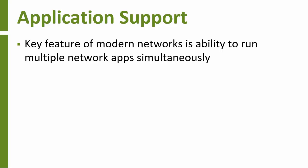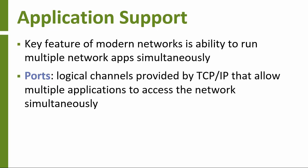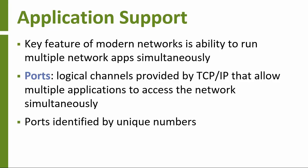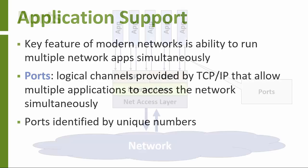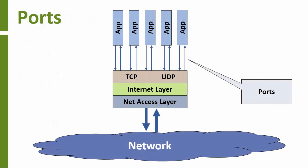Everyone knows you can run multiple networked applications on the same computer. TCP-IP supports multiple applications simultaneously through logical channels referred to as ports. Every port has a unique number used to identify it. An easy way to understand ports is to think of them as logical pipelines through the network stack — data can flow back and forth between the application and the network stack through these pipes.